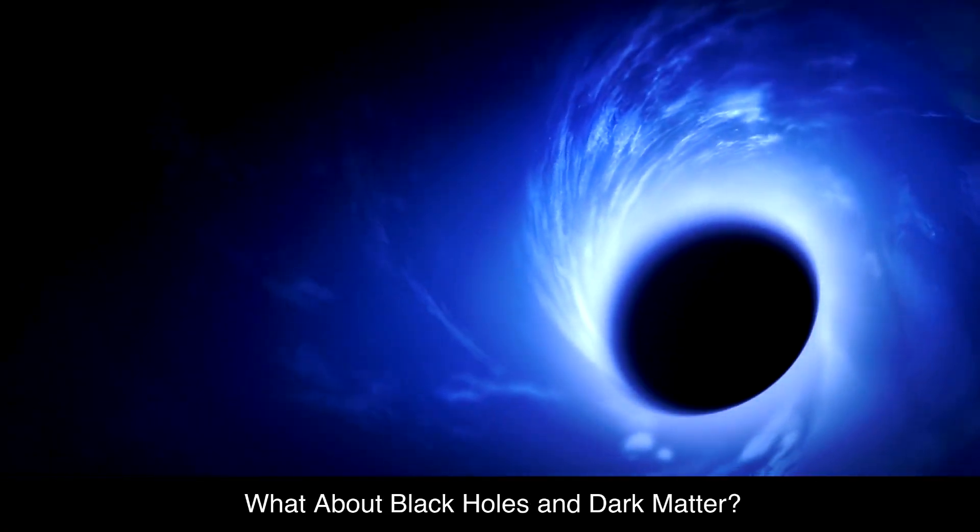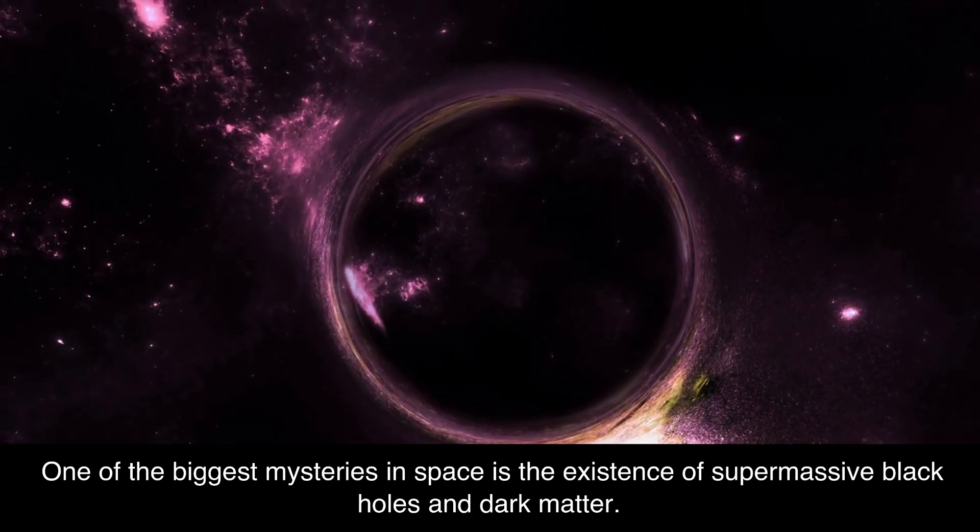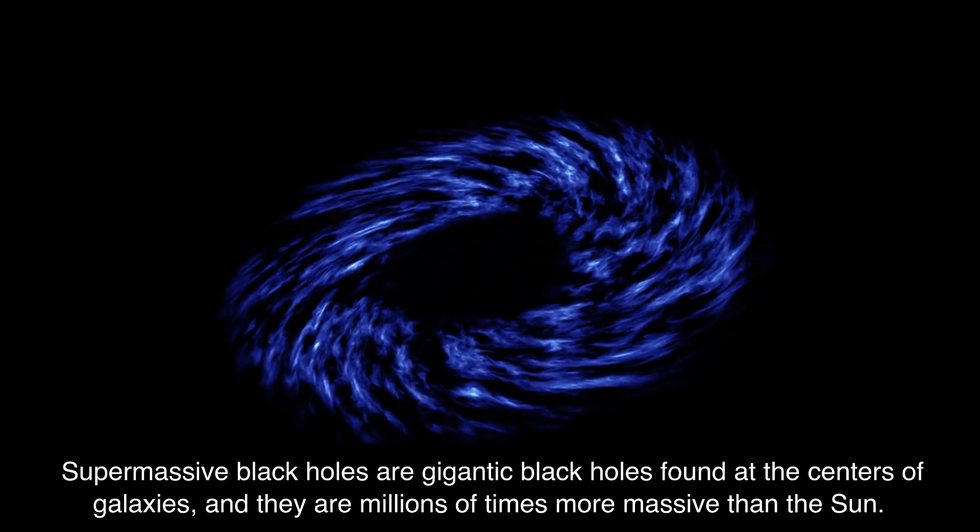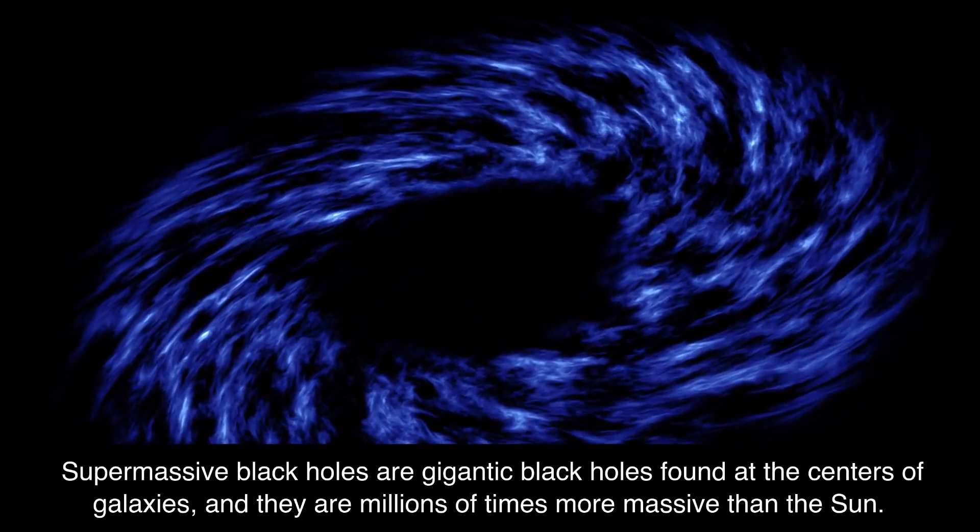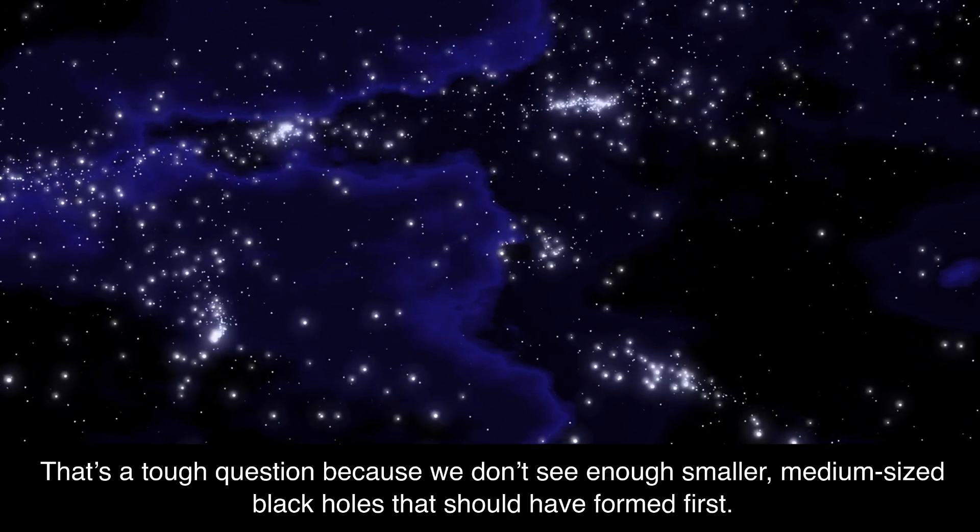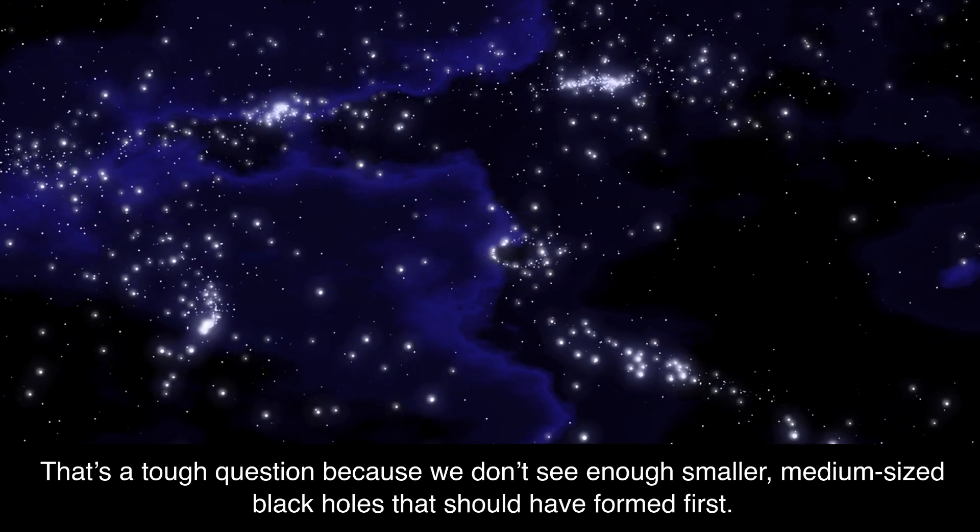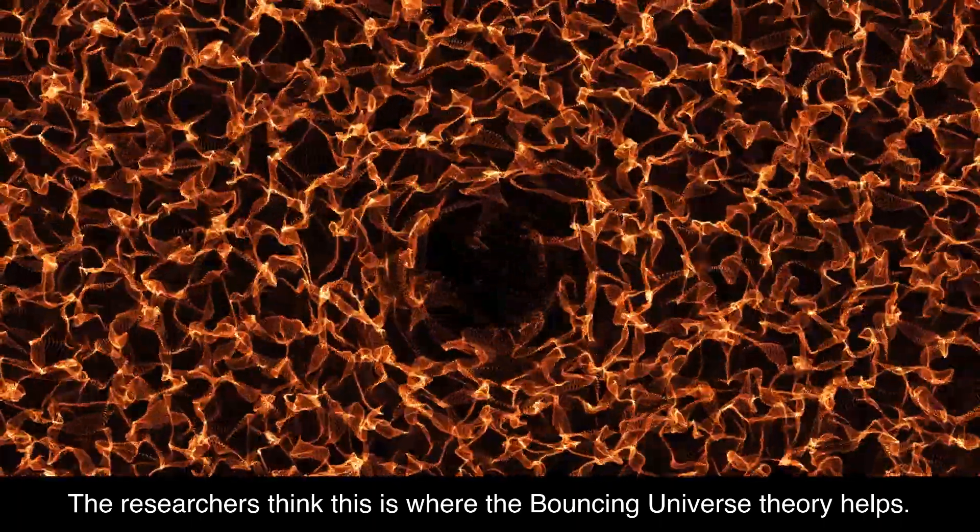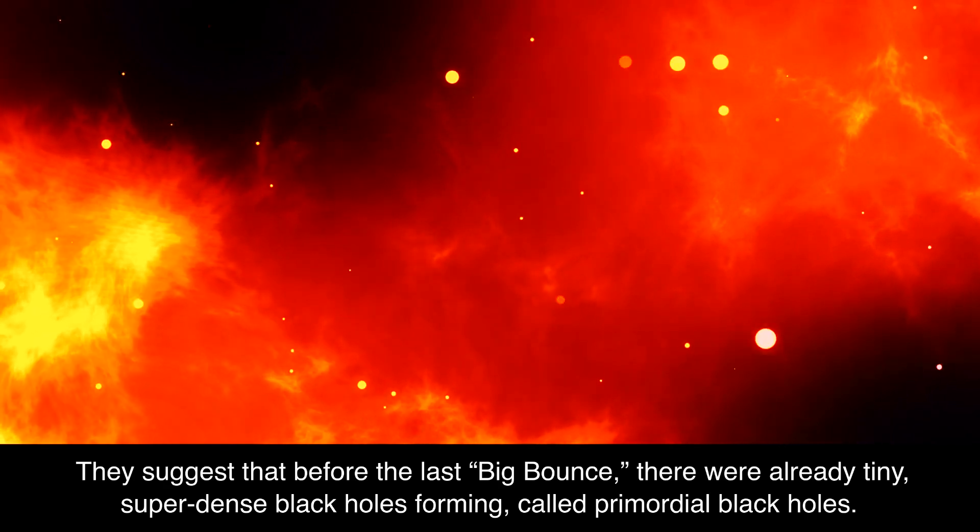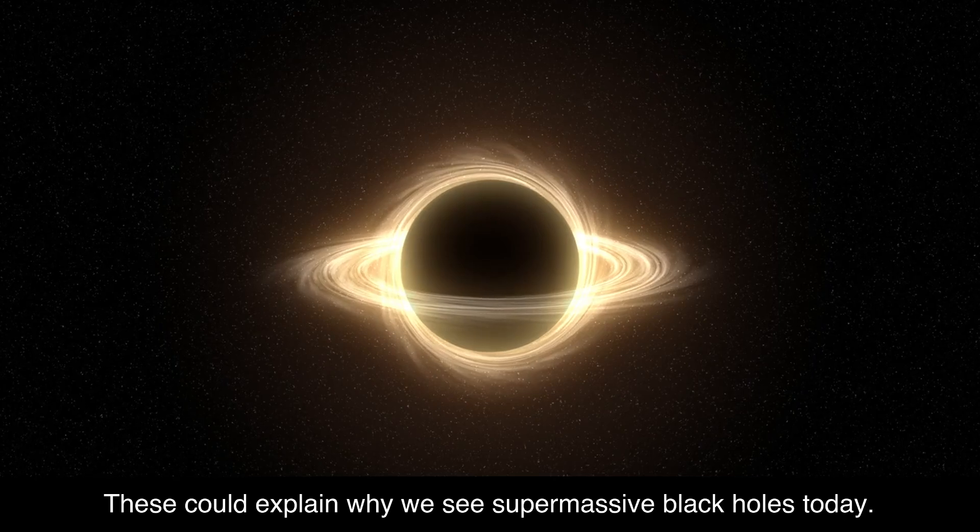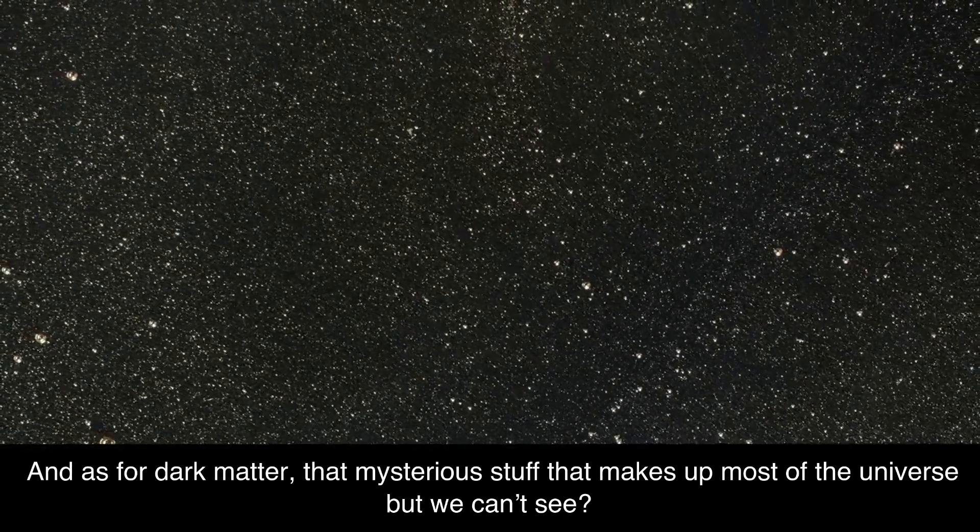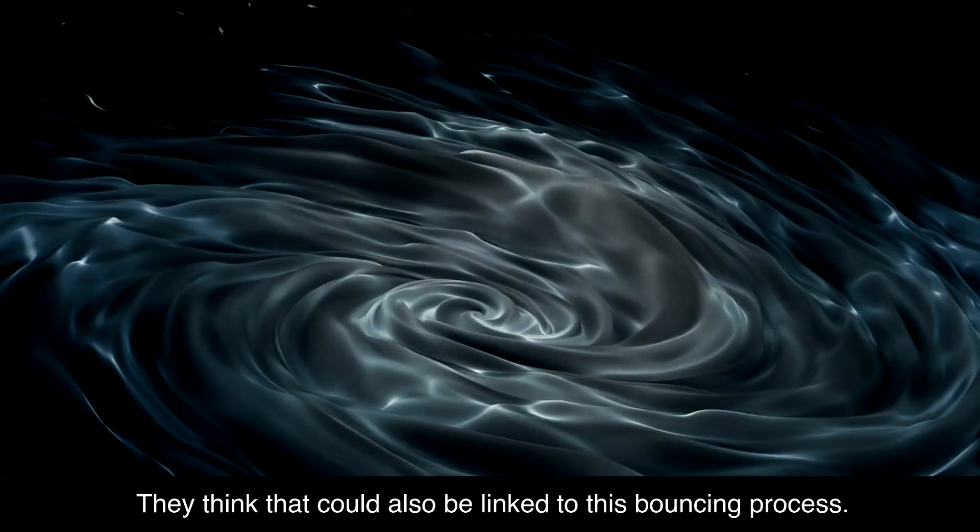What about black holes and dark matter? One of the biggest mysteries in space is the existence of supermassive black holes and dark matter. Supermassive black holes are gigantic black holes found at the centers of galaxies, and they are millions of times more massive than the Sun. But where did they come from? That's a tough question, because we don't see enough smaller, medium-sized black holes that should have formed first. The researchers think this is where the bouncing universe theory helps. They suggest that before the last big bounce, there were already tiny, super-dense black holes forming, called primordial black holes. These could explain why we see supermassive black holes today. And as for dark matter, that mysterious stuff that makes up most of the universe but we can't see, they think that could also be linked to this bouncing process.